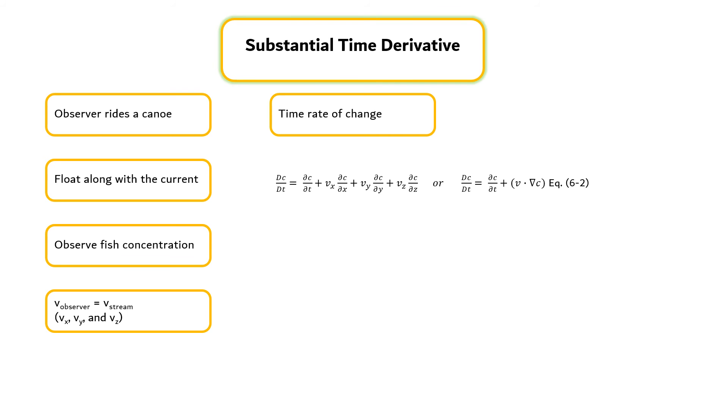The special operator d per dt is called the substantial derivative, which means that the time rate of change is reported as one moves with the substance.